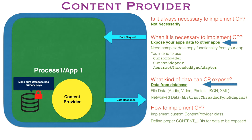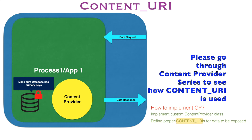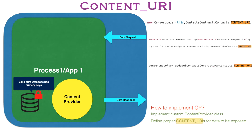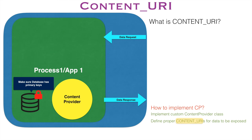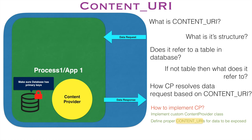Having made that clear, the next important question is: what is a Content URI? If you have used a Content Resolver in any application to access a Content Provider, you might have seen quite a number of Content URI usages. Content URI is basically the most important concept to access any data from a Content Provider. You would be wondering: what is a Content URI, what is its structure, how does the Content Provider resolve a request based on a particular Content URI, and does it refer to a table in the database or something else?